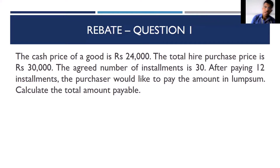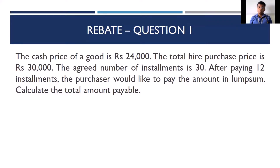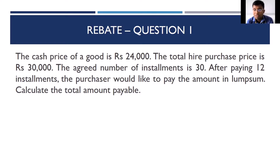So what has happened here is the purchaser and the vendor have gone into an agreement. The cash price was 24,000, however the hire purchase price worked out to be 30,000. The agreed number of part payments was 30, and after making 12 part payments the purchaser decided to cancel the agreement. We have to calculate the settlement amount.